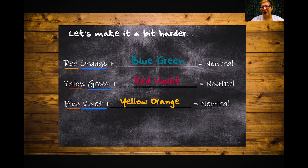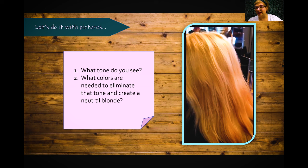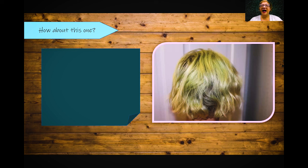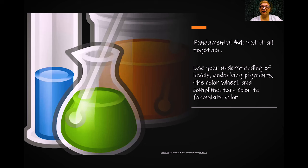Looking at photo examples: if I see yellow-orange in the hair — maybe the bottom didn't lift as high — I need to eliminate that tone. If I have yellow-orange, I need violet and blue, so I'd use blue-violet on the bottom. The yellow on top can just use violet. Another photo showing green or yellow-green hair — maybe from chlorine. If I have yellow-green, I need violet and red, so I'd use red-violet to eliminate that tone. Break it down into pieces: what tones do you see, what do you need to combat?